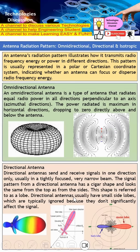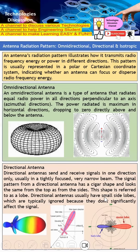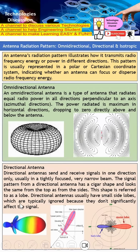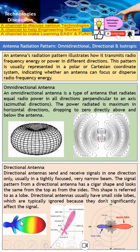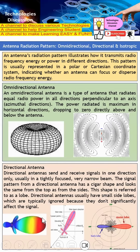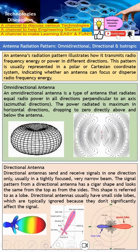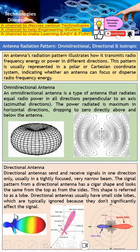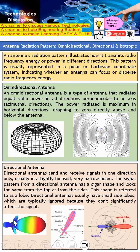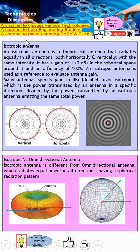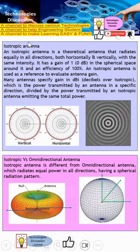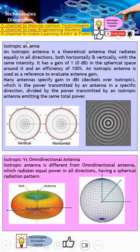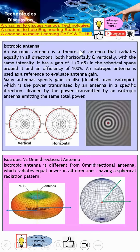This shape is referred to as a lobe. Directional antennas usually have very little side lobe, which is typically nothing, because they don't significantly affect the signal. This cigar shape is what we call the main lobe — 90% of the energy is inside the main lobe, with very little on the side lobes, so we can essentially ignore the side lobes.